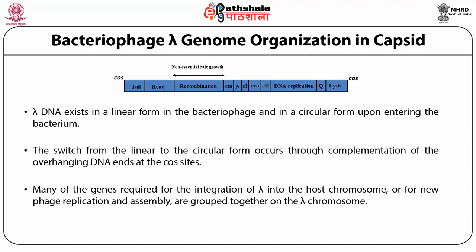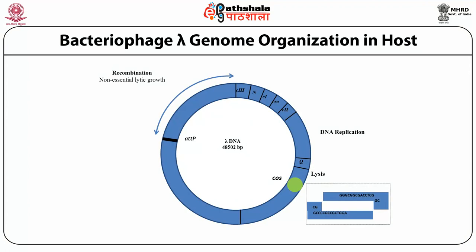Bacteriophage lambda genome organization in the capsid: lambda DNA exists in a linear form in the bacteriophage and in a circular form upon entering the bacterium. The switch from linear to circular form occurs through complementation of the overhanging DNA ends at the cos sites. Many of the genes required for integration of lambda into the host chromosome or for new phage replication and assembly are grouped together on the lambda chromosome. In the figure, the cos site can be shown with its complementary sequences.